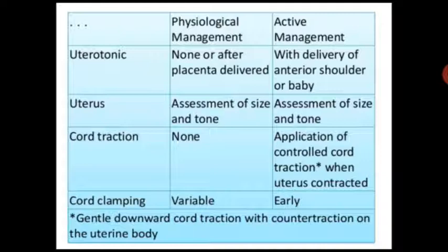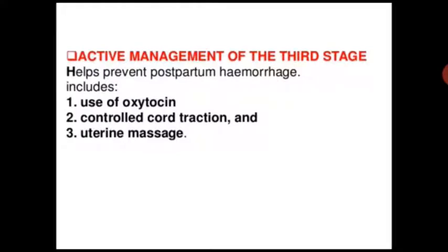Then cord clamping: variable in physiological management and early in active management. Active management of the third stage of labor helps prevent postpartum hemorrhage and includes use of oxytocin, controlled cord traction, and uterine massage.